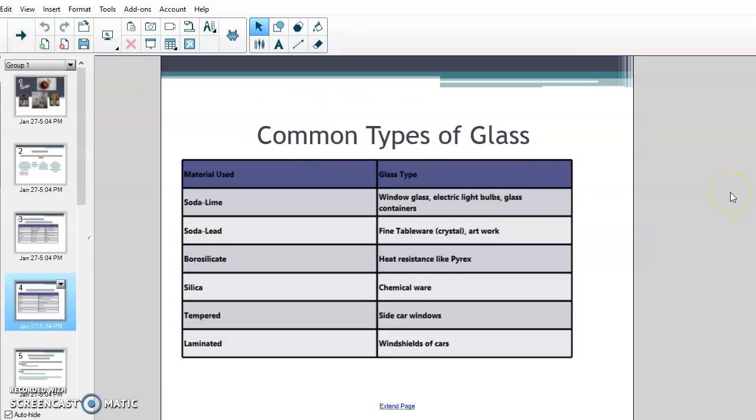Some of the common types of glass - window glass, electric light bulbs, and glass containers all use what's called soda lime. So it has the soda ash in it and they add lime to it. Fine tableware, crystals, artwork, vases - that has soda lead in it. We already talked about boron oxide, the boron silicate, which is your heat resistant things like Pyrex stuff that you can put in the oven or microwave and it won't crack. Chemical wear is silica - the stuff that you use, beakers, test tubes. You can add acid to it, you can add bases, you can heat it up. That's all your chemical wear has silica in it.